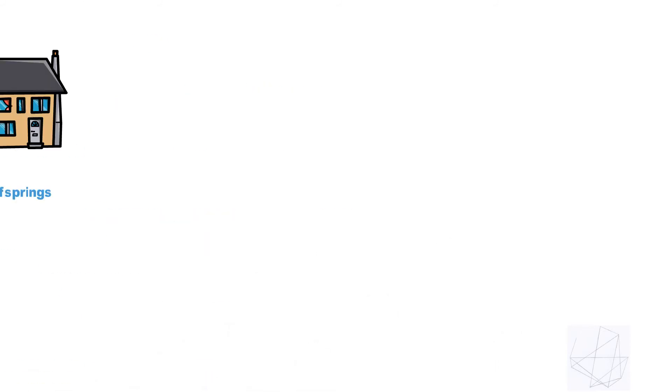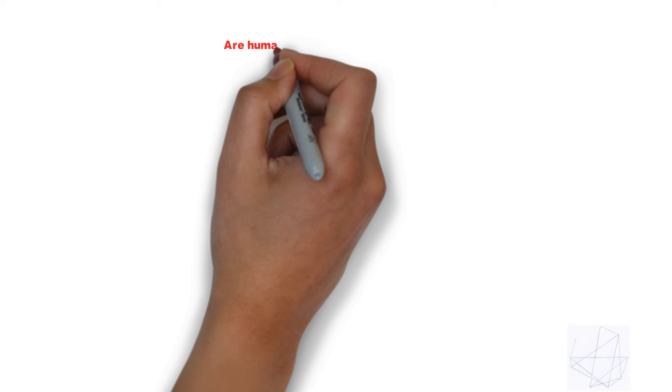Humans are K-strategists. Humans are mostly K-selected species overall.